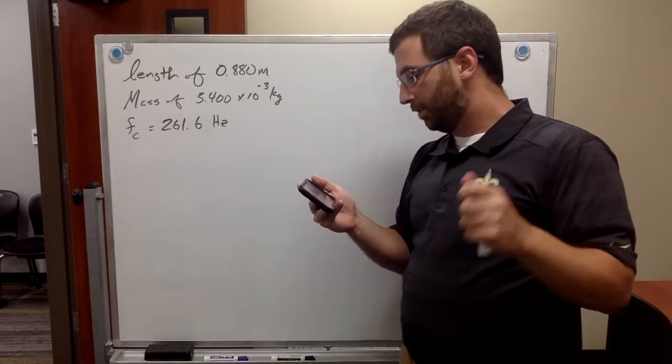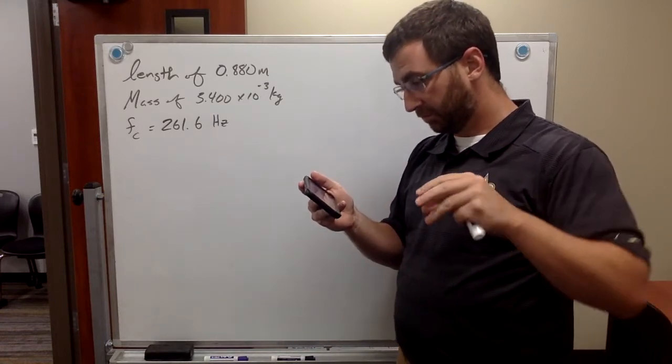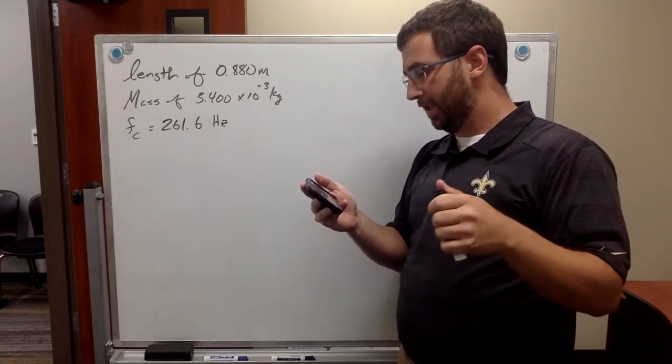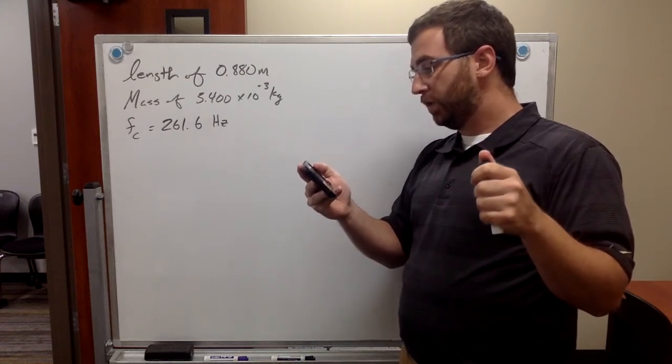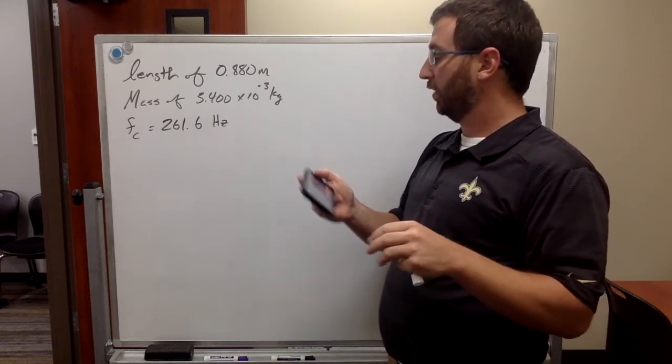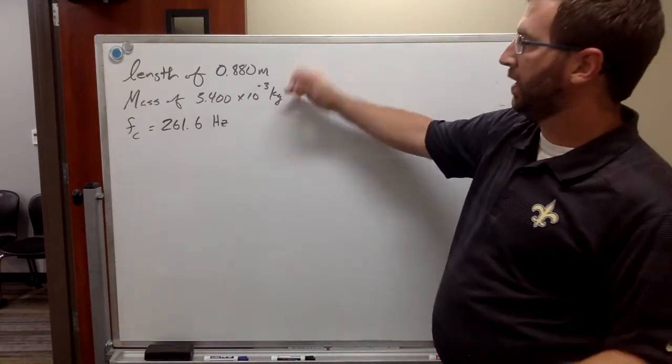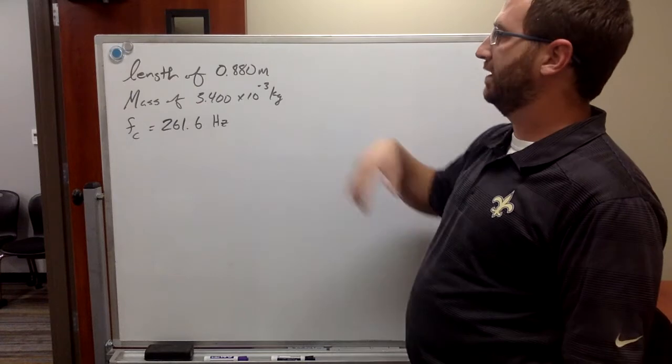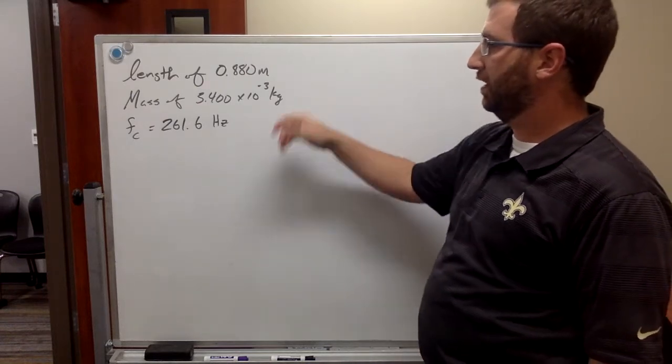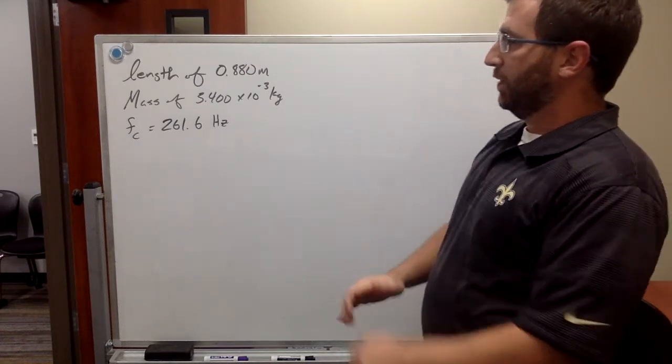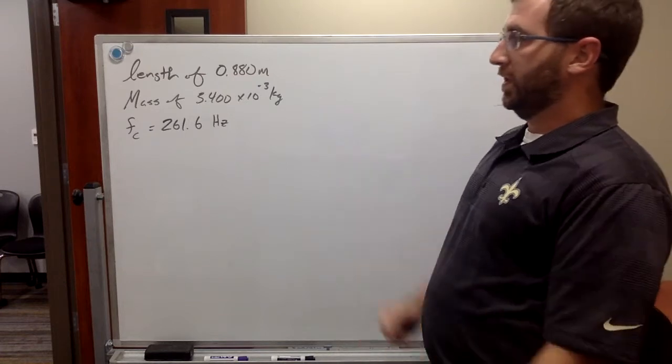In this problem, the frequency of middle C is 261.6 hertz on the chromatic music scale. I have that information already written out right here. Length is 0.8 meters, mass is 3.4 times 10 to the minus 3 kilograms, and the frequency at C is 261.6 hertz.